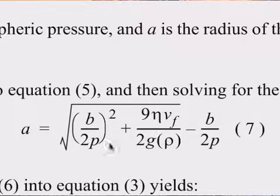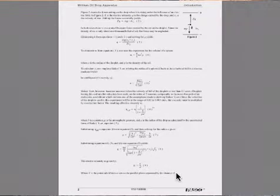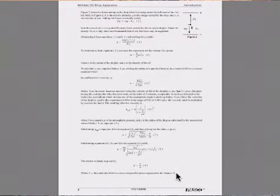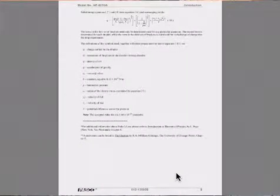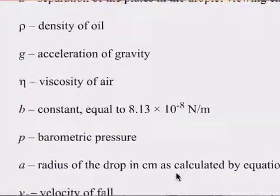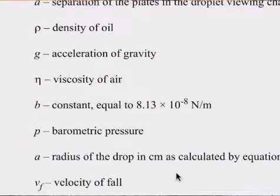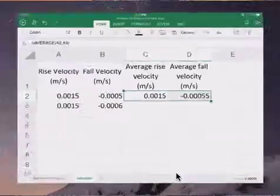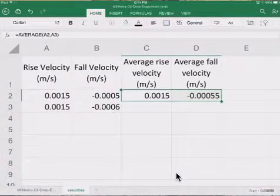B is right here — it's a constant equal to 8.13 times 10 to the negative 8 Newtons per meter. Let's go ahead and put that into Microsoft Excel.